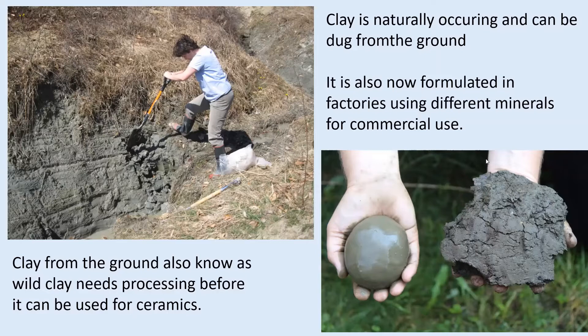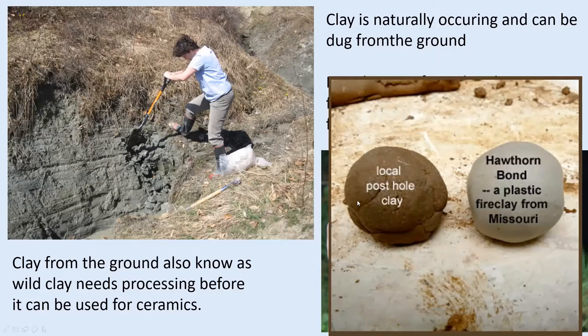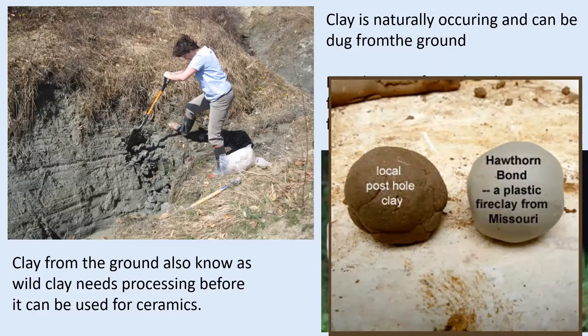You can dig clay, process it, and get smooth clay. But other clays are now formulated in factories because people know what ingredients to put in to get the kind of clay they want — whether for pottery, making sinks, or tiles. There's dug clay versus clay produced in a factory: the wild clays will be slightly more unpredictable, slightly more rough, and might have more interesting colour. You just never really know what you're going to get.